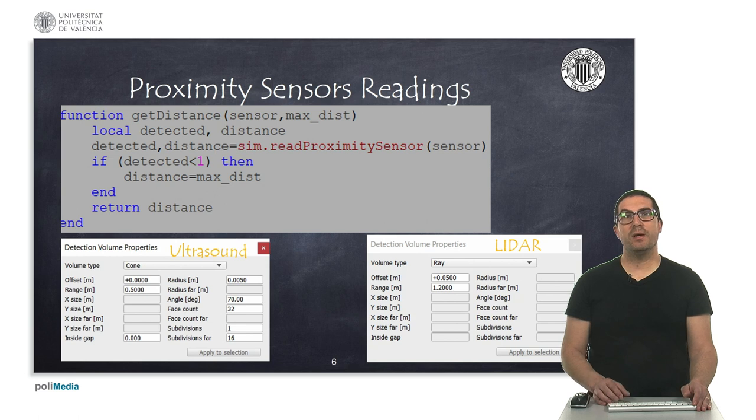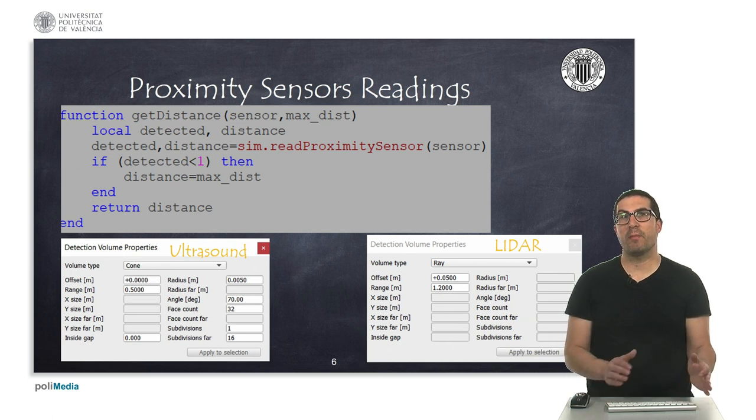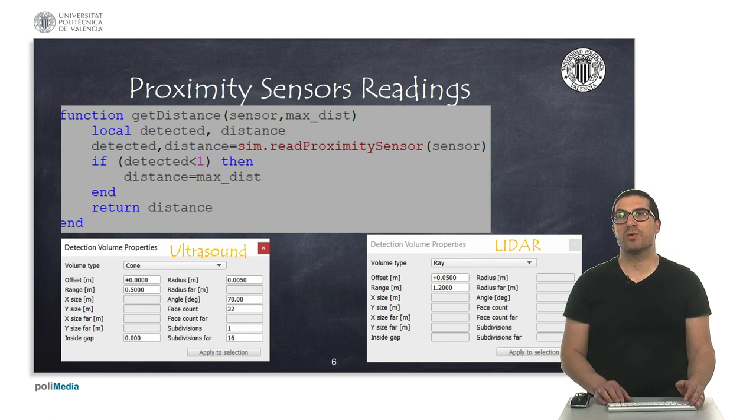In order to read the distance from proximity sensors, this is rather quite simple, and this is something we have already seen several times in previous videos. Here I show you a function that will allow you to obtain the distance from a proximity sensor. The variable maxdist is used to ensure that the sensor returns a value between zero and the maximum distance. This was convenient in some previous exercises, although for this maze solving problem, this is not a relevant parameter, as long as it's large enough.